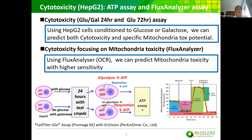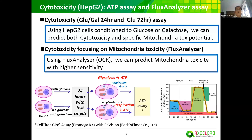Cytotoxicity has been related to not only acute toxicity but also organ toxicity after repeated dose studies. We can offer two cytotoxicity assays. The first uses the HepG2 cell line conditioned to glucose and galactose. In the HepG2 cell line conditioned to galactose, we can detect mitochondrial toxicity as compared with HepG2 conditioned to glucose. Another cytotoxicity assay is the flux analyzer assay, in which we can predict mitochondrial toxicity with higher sensitivity.